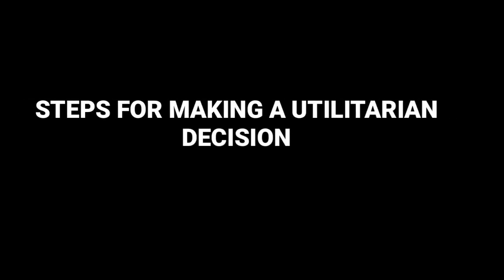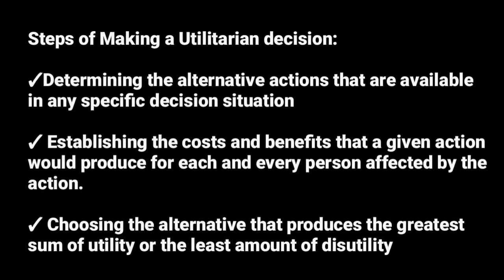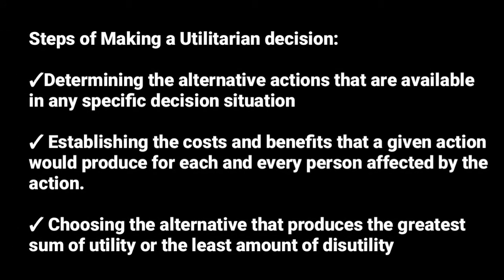Let's look at the steps for making a utilitarian decision. There are three steps, and the first step is to determine the alternative actions that are available in a specific decision situation.